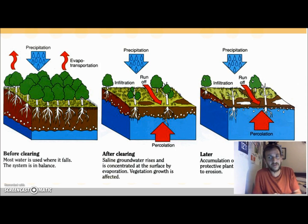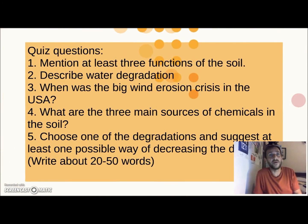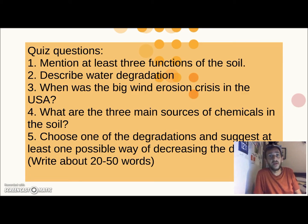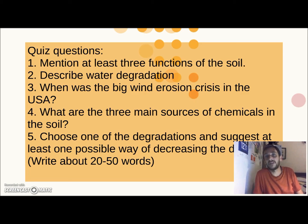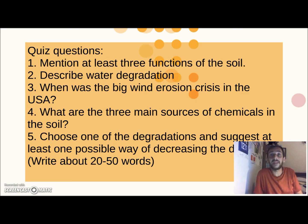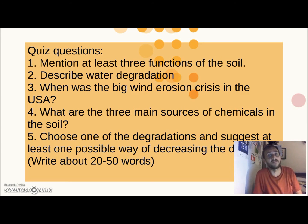Here are your questions for this week's quiz. Question one: mention at least three functions of the soil. Question two: describe what happens with water degradation. Question three: when was the big wind erosion crisis in the USA — and for an extra point, what was its name? Question four: what are the three main sources of chemicals in the soil? Question five: choose one of the degradations and suggest at least one possible way of decreasing the damage — this is your written task.